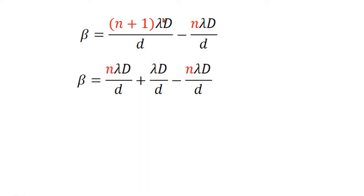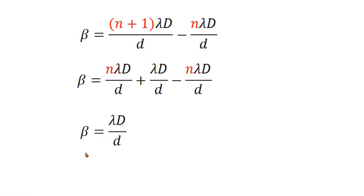Expanding, this gives n lambda d divided by D plus lambda d divided by D, minus n lambda d divided by D. The n lambda d divided by D terms cancel, leaving beta equal to lambda d divided by D. So fringe width beta equals lambda d divided by D.